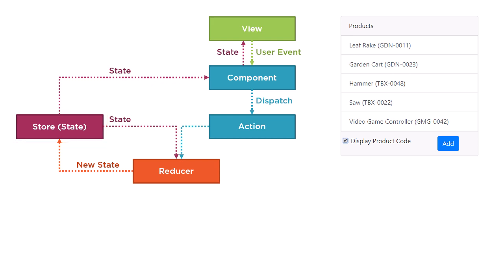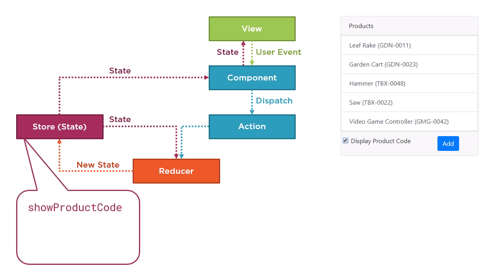For our first scenario, our state is simple. We track the value of this checkbox, defining whether to include the product code in the display of our product list. Since it's a flag, we'll call that bit of state showProductCode.